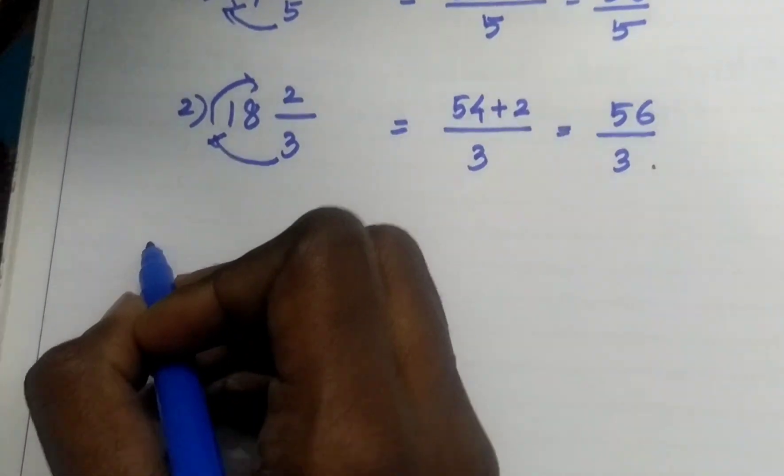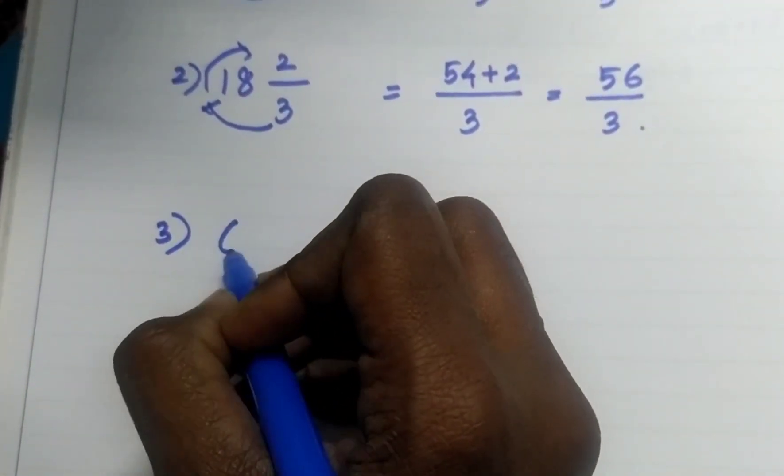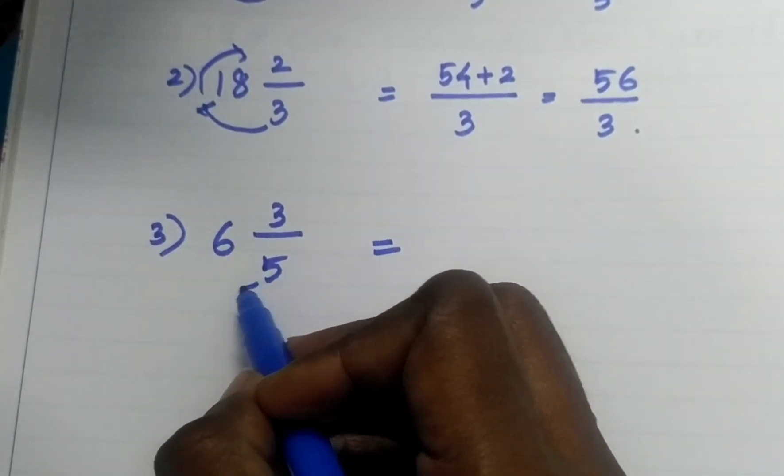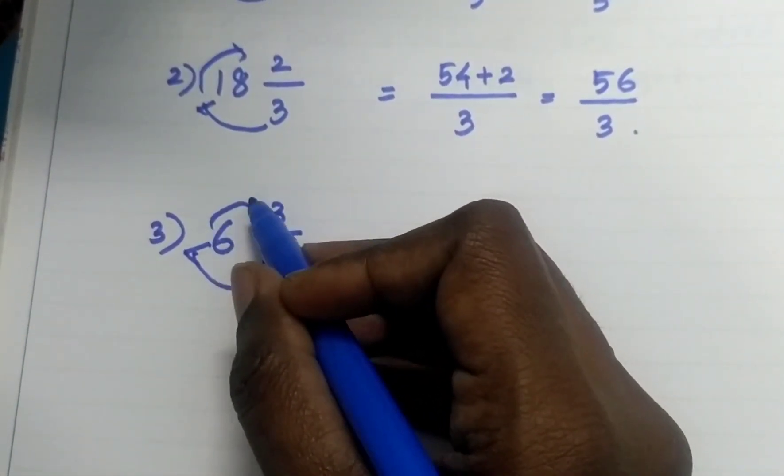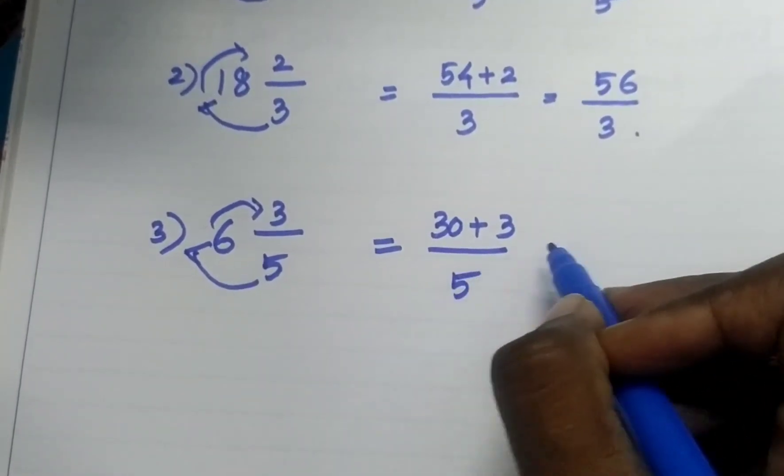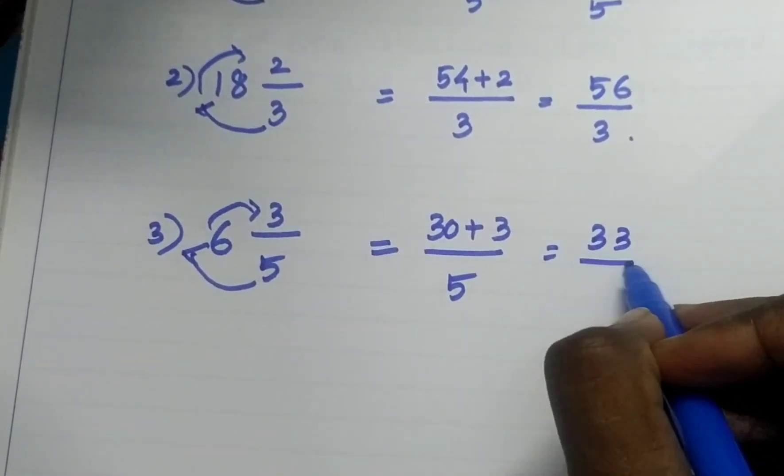One more example. What do you have to do first? This side: 6 times 5 is 30. 30 plus 3. 30 plus 3 by 5, so that means 33 by 5.